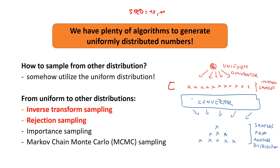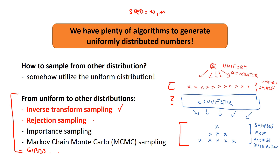In other words, if we have uniform samples and we want normally distributed numbers, is there something like a converter that takes uniform samples and converts them into normal, exponential, or whatever distribution? The answer is yes, and here is a list of some of these converters. In this series I want to focus on the first two: inverse transform sampling — the most basic sampling method — and rejection sampling. There's also importance sampling, which is my favorite, and MCMC, a very popular one.